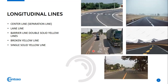The barrier line consists of double solid yellow lines. It means that motorists are prohibited from crossing — never cross to pass another vehicle unless permitted. Overtaking is prohibited when you see double solid yellow lines.